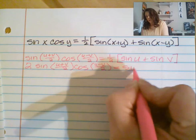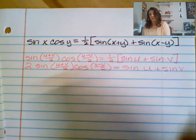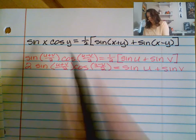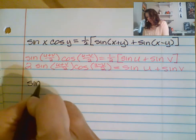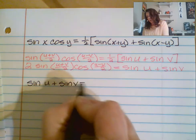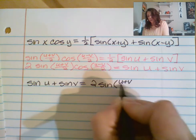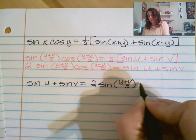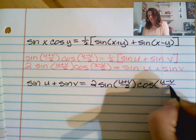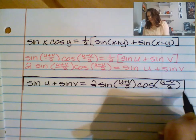That gives us the sum of two sine values. So the third identity is: sine of u plus sine of v equals 2 times sine of (u plus v)/2 times cosine of (u minus v)/2. That's the third of our four identities.